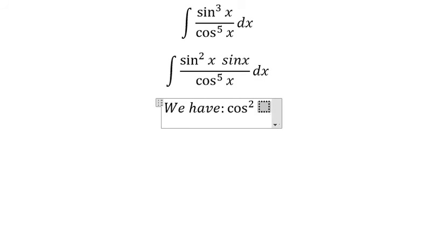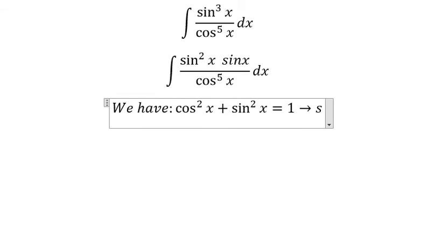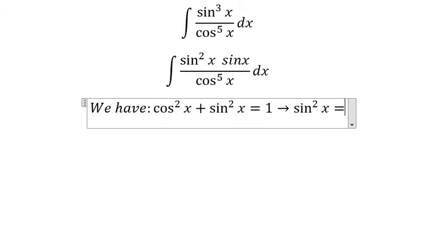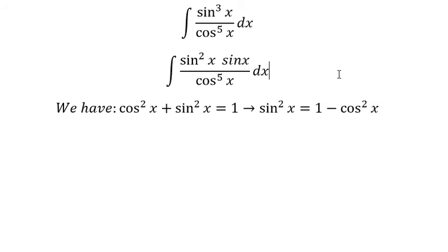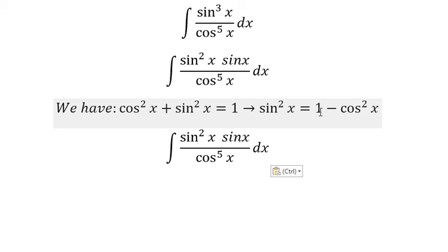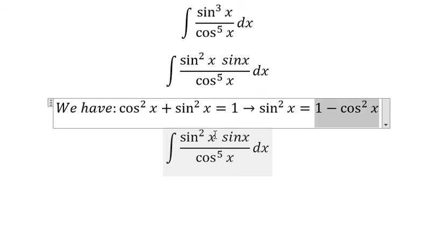Next we have cosine x square plus sine x square equals to number 1. So we get about sine x square equals to 1 minus cosine x square, so we put this one in here.